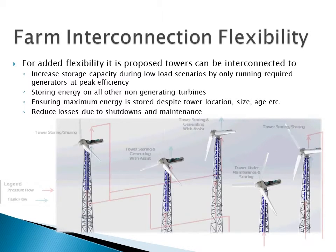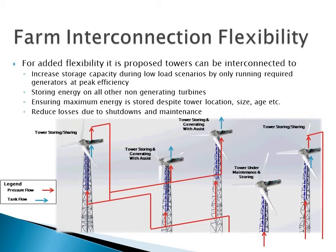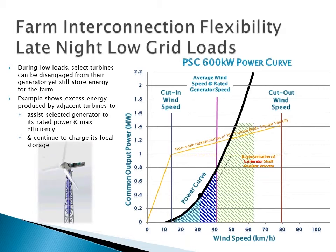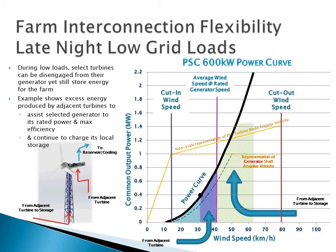The major advantage of the Mathers PSC regeneration system is the flexibility it allows. By interconnection of storage between towers, we can achieve increased storage capacity during low grid loads by only running required generators at peak efficiency and storing energy on all other non-generating turbines, ensuring maximum energy is stored despite tower location, size, age, etc., and reducing losses due to shutdowns and maintenance. A single turbine under a low wind scenario can receive energy in the form of high pressure hydraulic flow from an adjacent non-generating turbine, with any further available hydraulic energy not used by the generator assist motors able to charge the local accumulator.